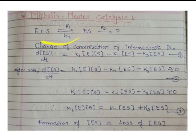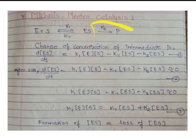ES also decomposes back to give the reactants, so the decomposition rate is negative: minus K-1 times [ES]. Additionally, ES decomposes to form product, giving minus K2 times [ES]. Now we apply the steady state approximation: according to it, the rate of change of concentration of the intermediate equals zero, so equation 1 equals zero.